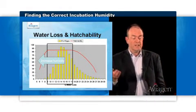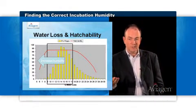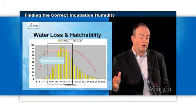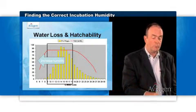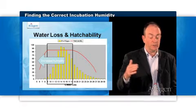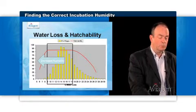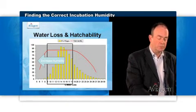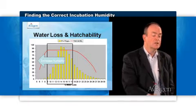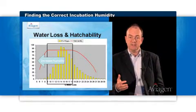Conversely, if the incubator humidity is too low, the distribution of eggs shifts to the right and you have more eggs on the poor hatchability side of the zone. Again, what you need to do is bring the eggs back into the box by increasing the incubator humidity.